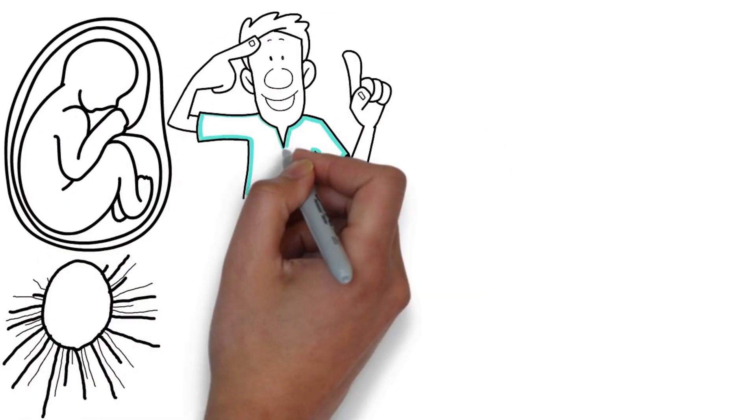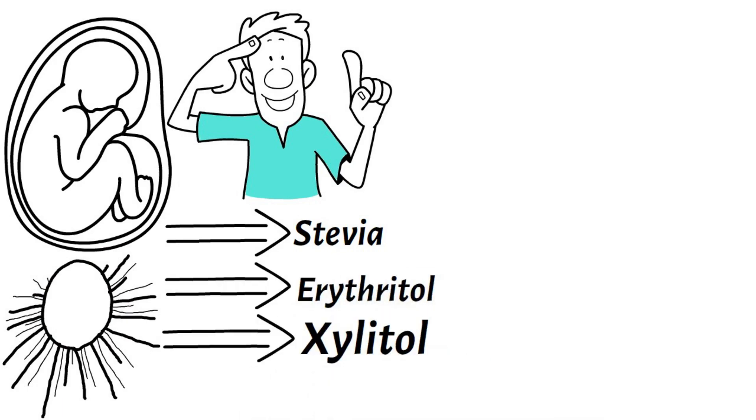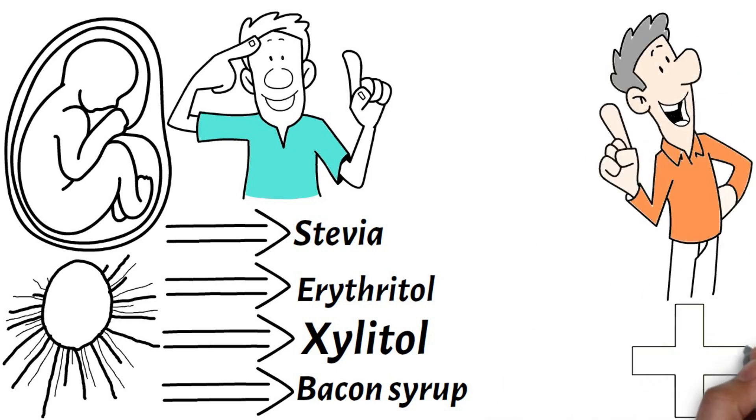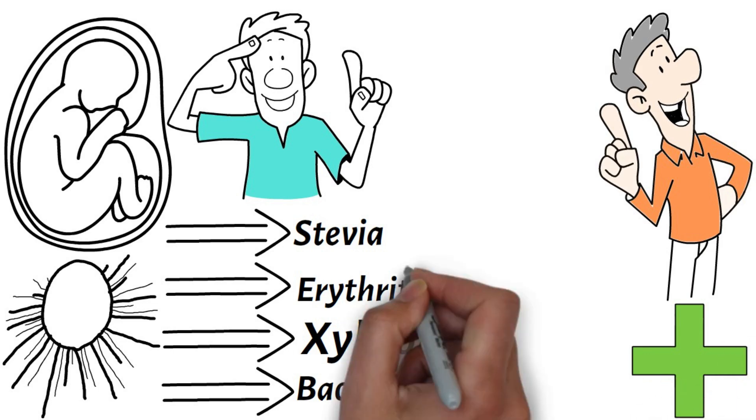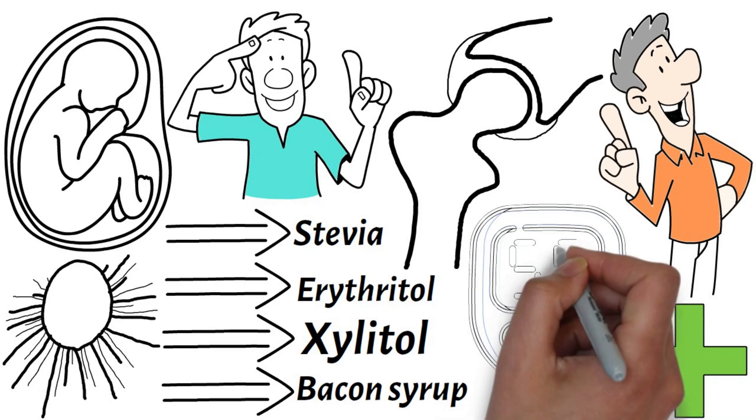Instead, opt for natural sweeteners like stevia, erythritol, xylitol, or even bacon syrup. These alternatives not only satisfy your sweet tooth, but also offer additional health benefits, such as improved bone density and lower blood sugar levels.